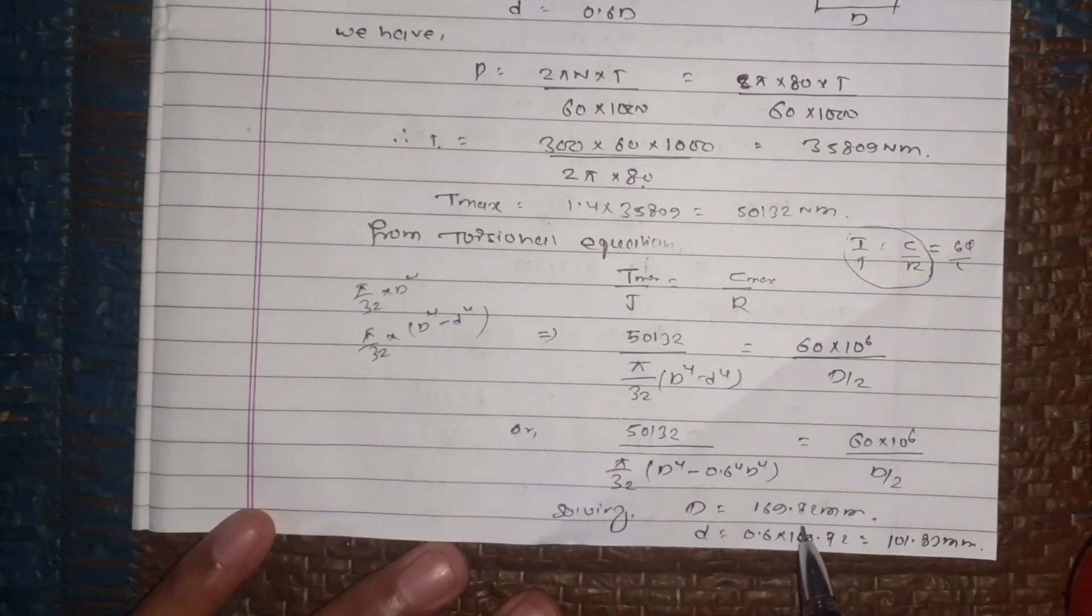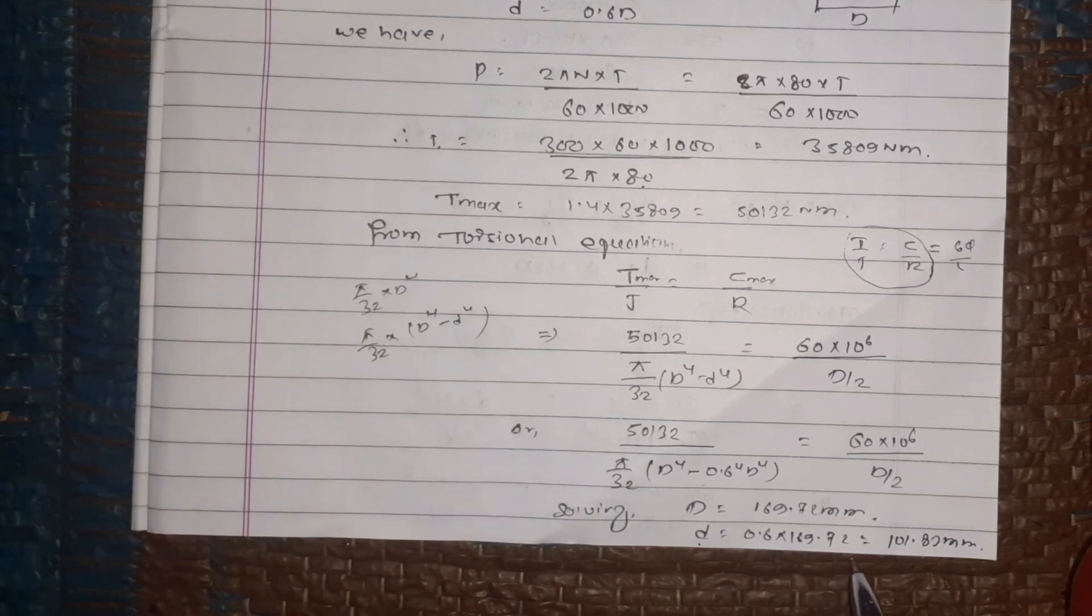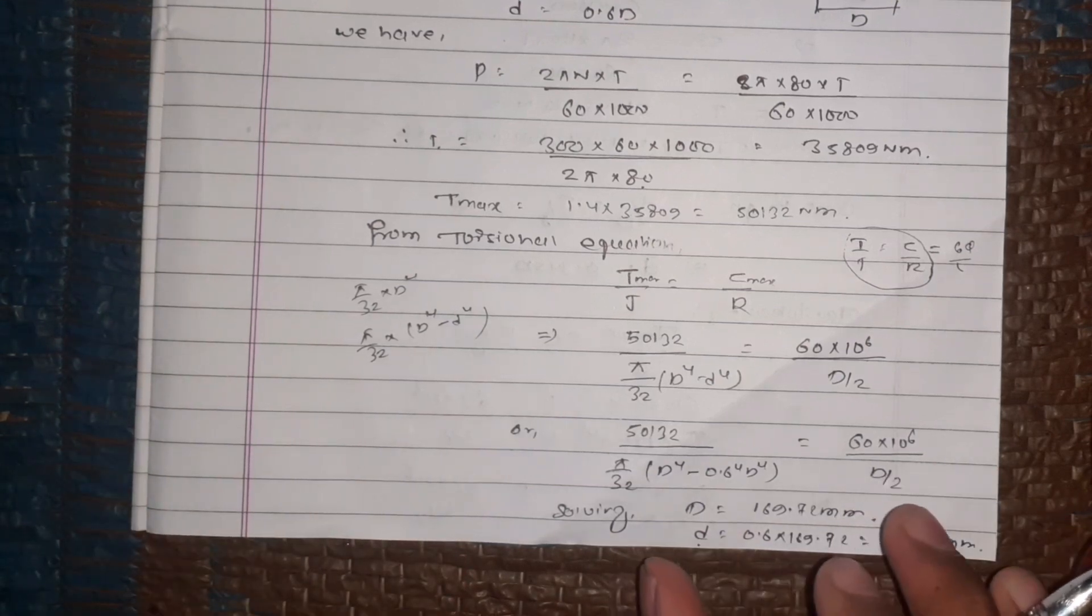D value is 0.16972 meter or 169.72 millimeters. Small d is 0.6 into 169.72, which equals 101.83 millimeters.